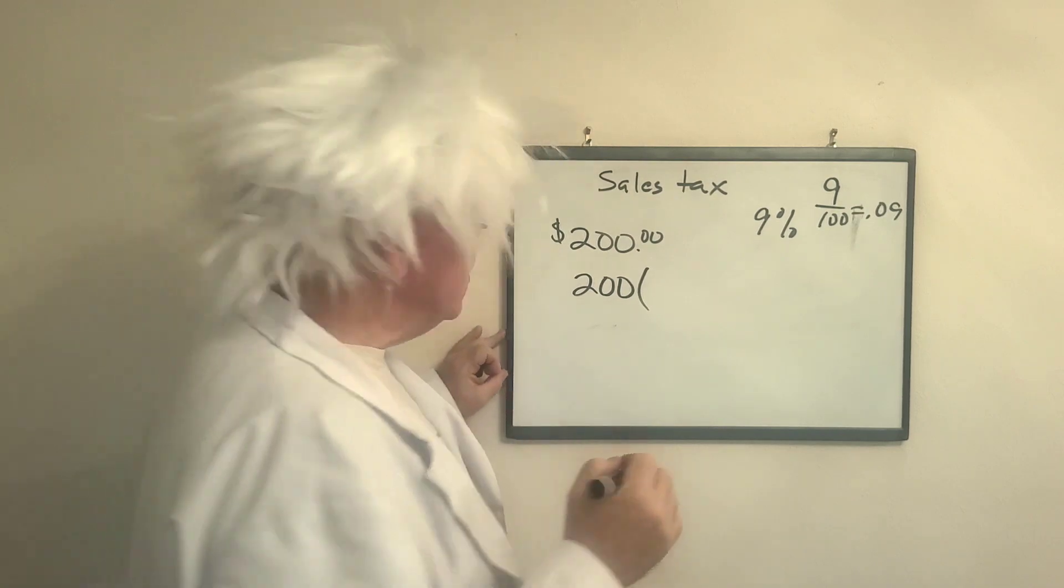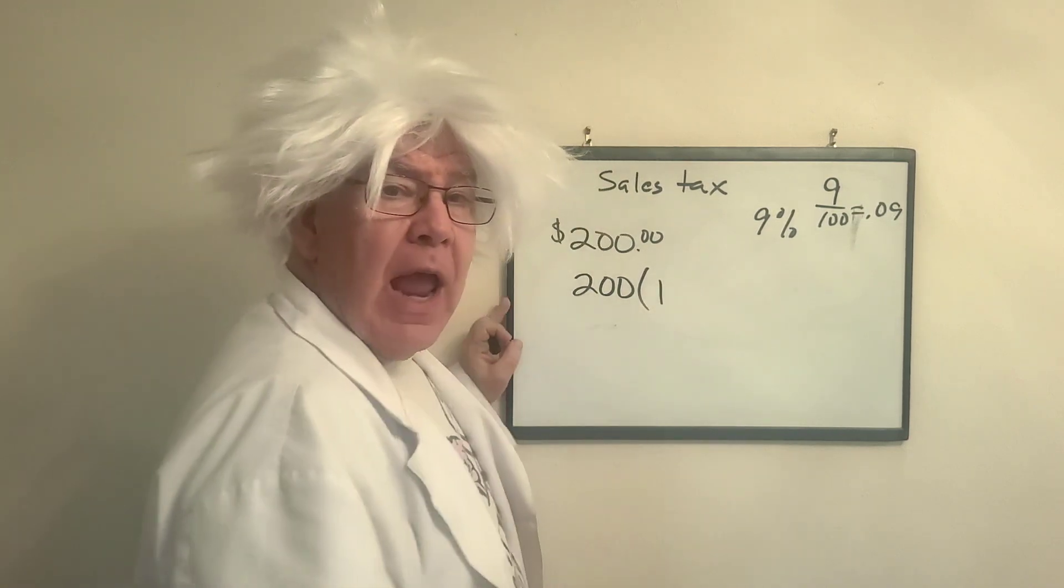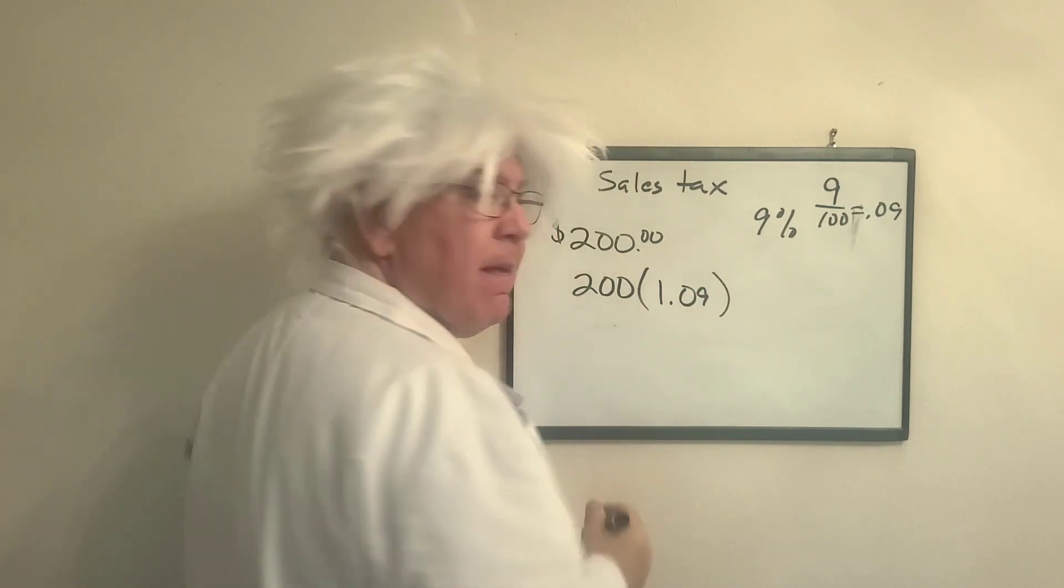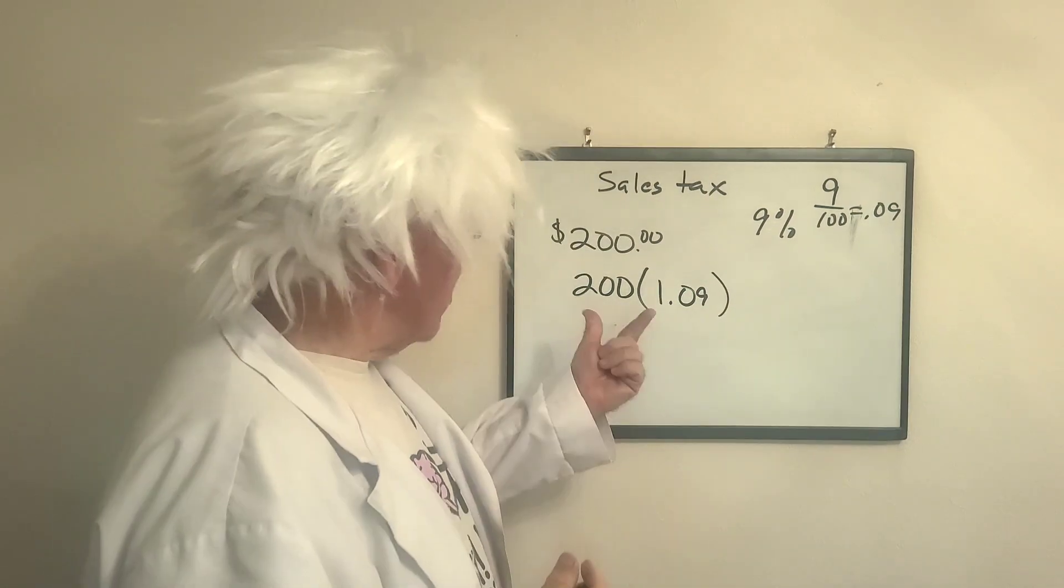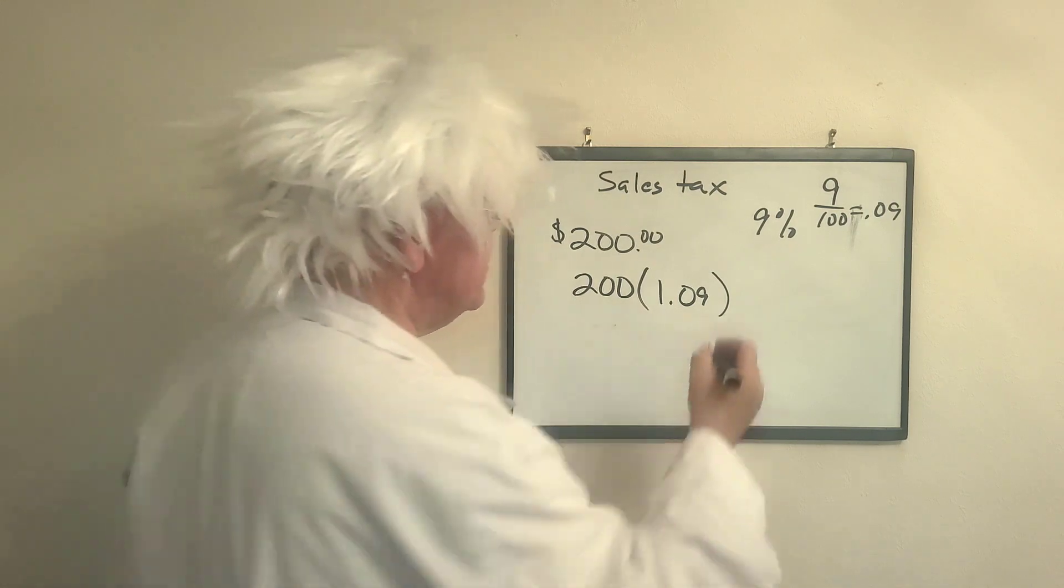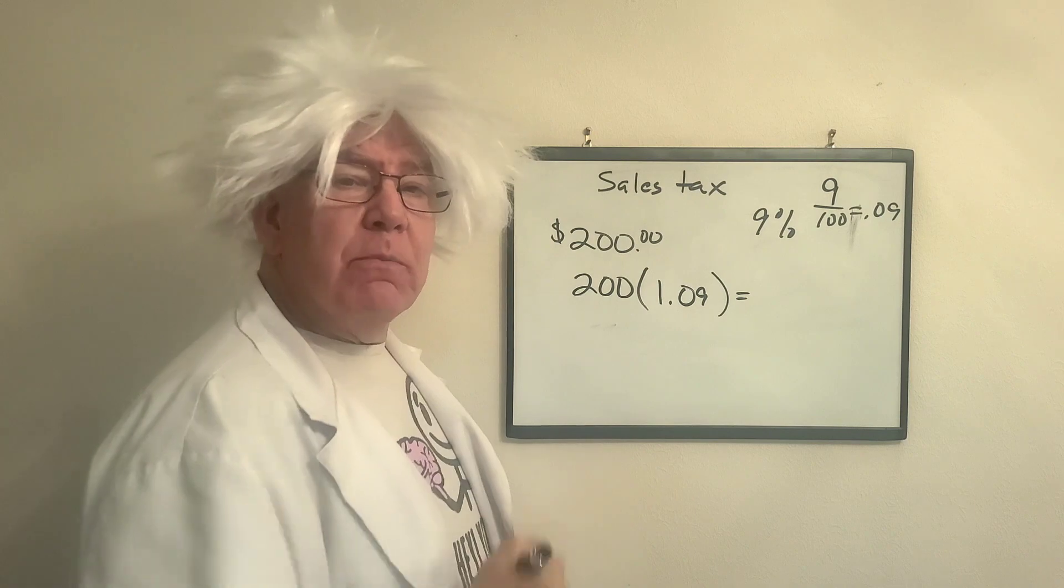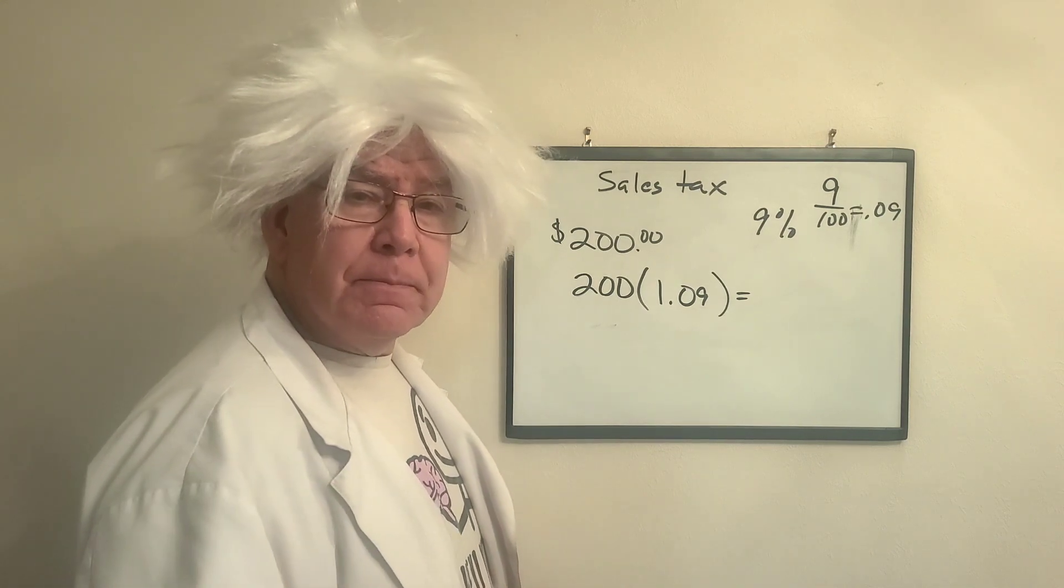Now, what we're going to do, we're going to take the whole amount and we're going to add in the tax, which is 9%. Now, when I multiply this together, I'm going to get my answer. Pause it, come back, and we'll do the answer together.